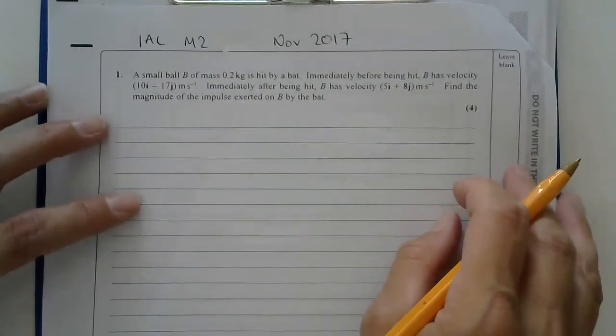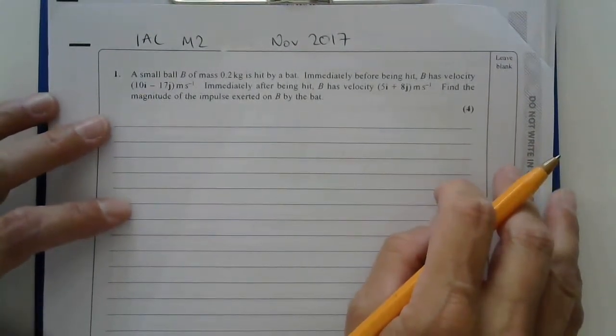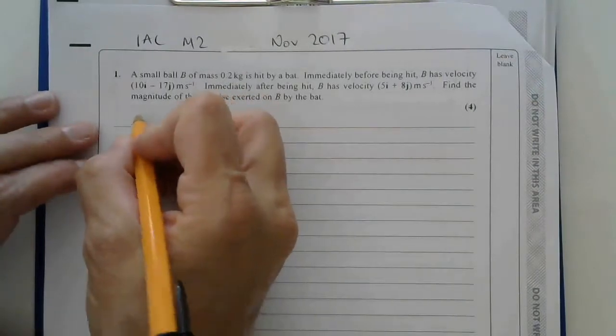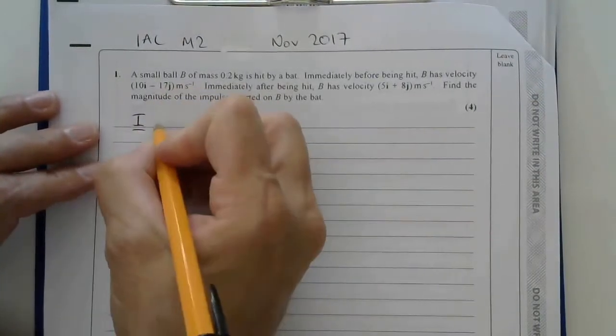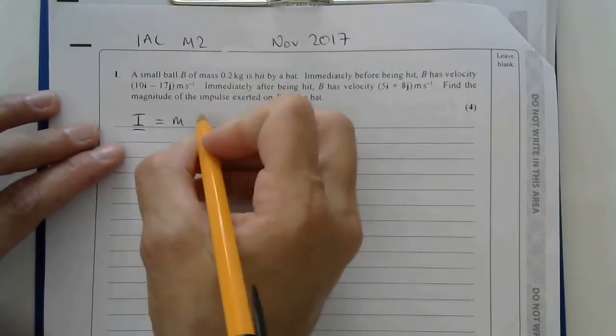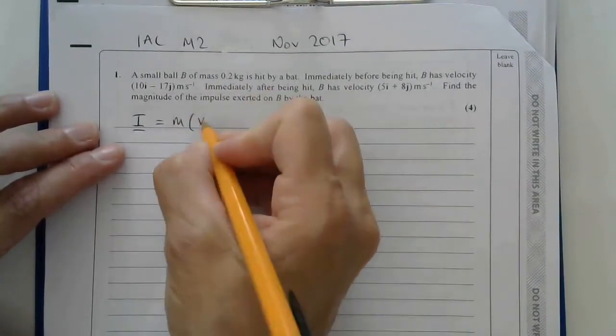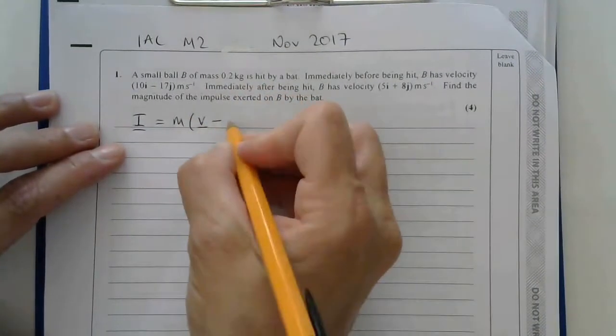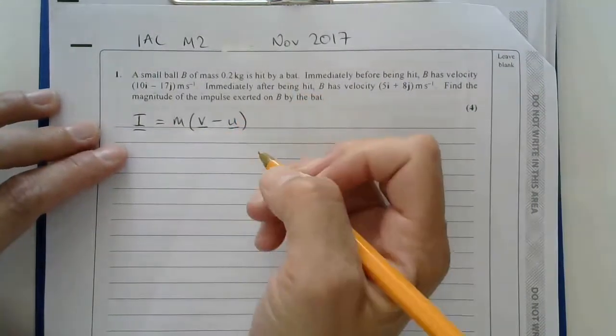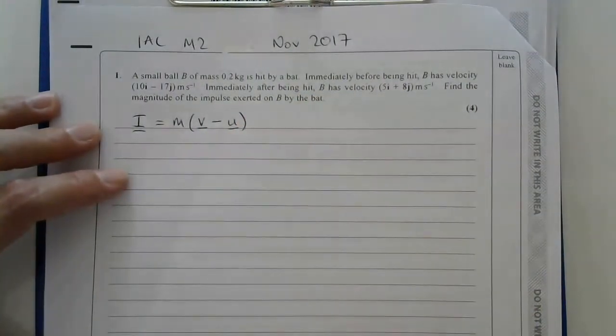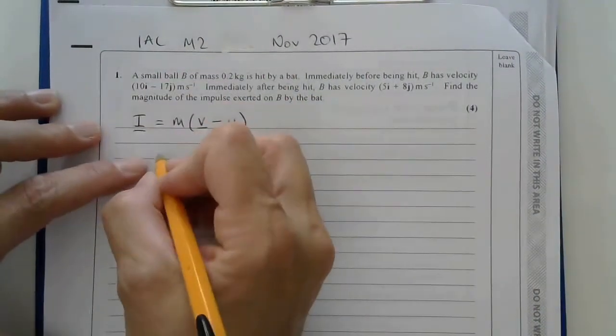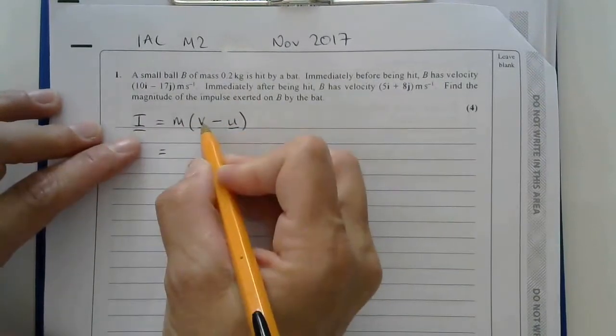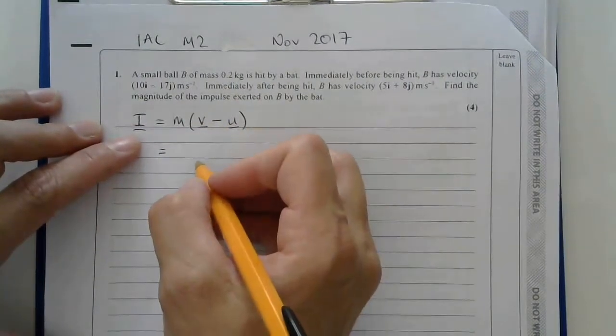So in this question, we need to use the formula that impulse is mass times the change in velocity, so final velocity minus initial velocity. And remembering that impulse and velocity are both vectors.